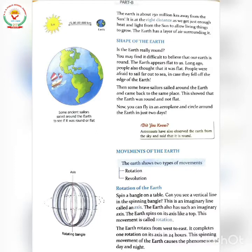The Earth is about 150 million kilometers away from the sun. It is at the right distance so that we get just enough heat and light from the sun to allow living things to grow. The Earth has a layer of air surrounding it. Prithvi ke charo aur hawa ki ek parat hai — there is a layer of air around the Earth.